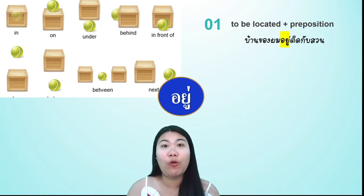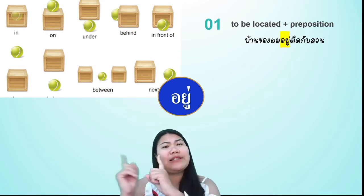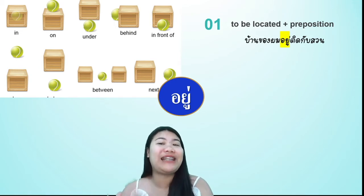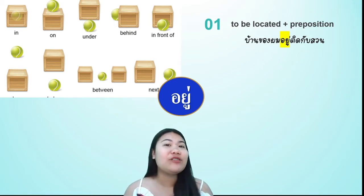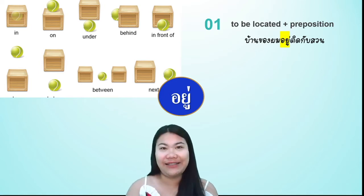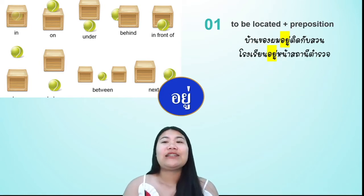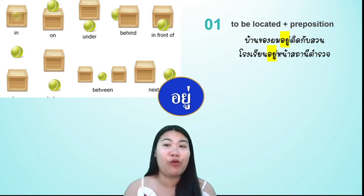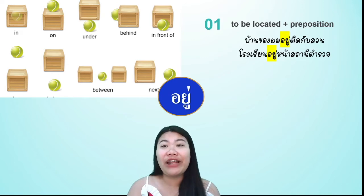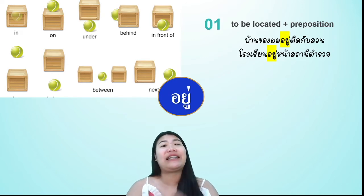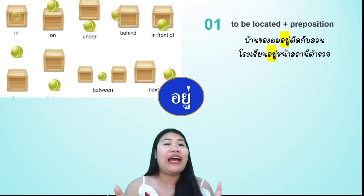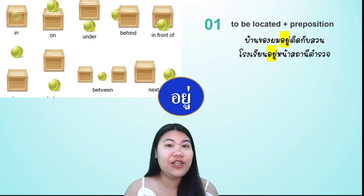บ้านของผมอยู่ติดกับสวน — so ติดกับ means 'next to.' My house is next to the garden. Next: โรงเรียนอยู่หน้าสถานีตำรวจ — the word หน้า means 'in front of,' and the word อยู่ is followed by a preposition. The school is in front of the police station.